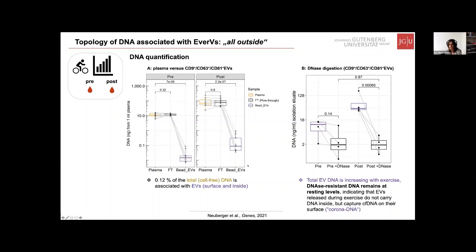We further performed DNase digestion on these bead-isolated EVs. The increase of DNA associated with EVs goes down to basal levels after digestion, indicating that EVs released during exercise actually contain DNA on their surface — they capture free DNA present in plasma as a kind of a corona DNA. It's not inside the EV. To summarize: these exercise EVs are largely coming from cells lining or within the circulation. They may contribute to multi-organ signaling, even approaching distant organs, and the DNA on the surface may also contribute to these functions.